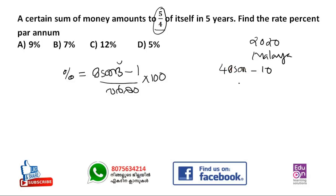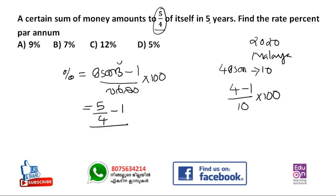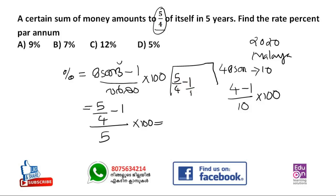The answer is: 5 by 4 minus 1, into 100. So 5 by 4 minus 1 equals the rate. Working through: 5/4 minus 1, multiplied by 100 gives the rate percentage.